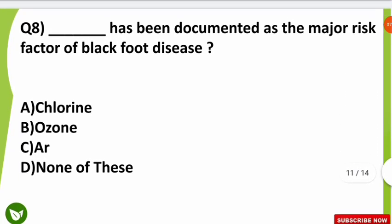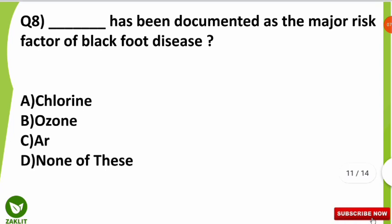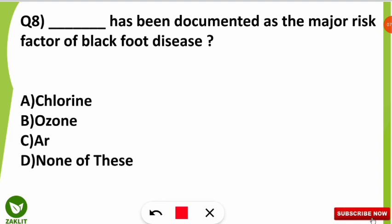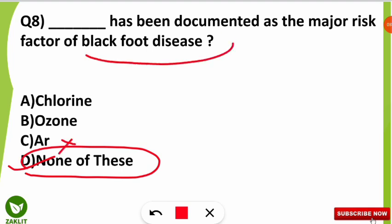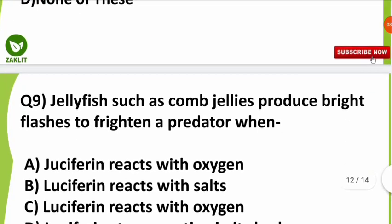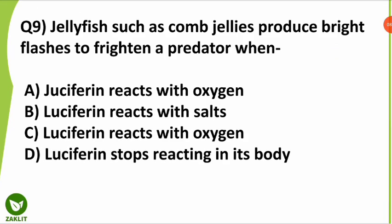The eighth question was: what has been documented as the major risk factor of black foot disease? The correct option is option D — none of these — because AR is argon, but black foot disease is caused by arsenic, whose chemical symbol is As. Many participants were confused here.